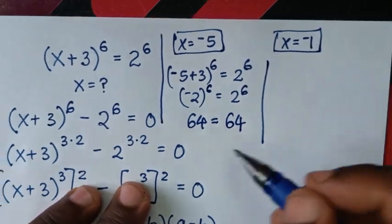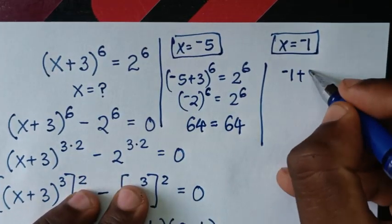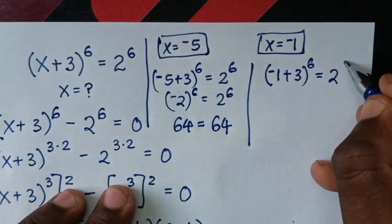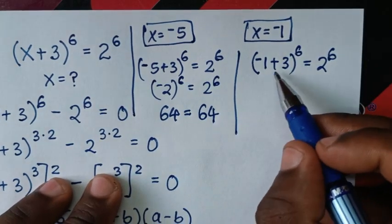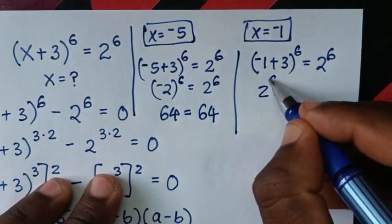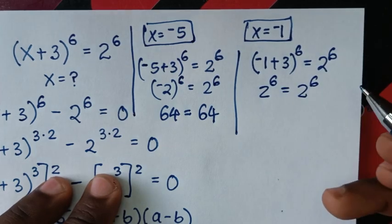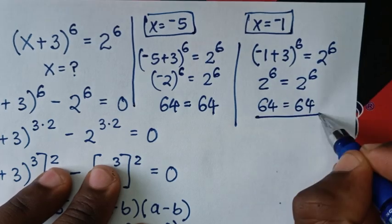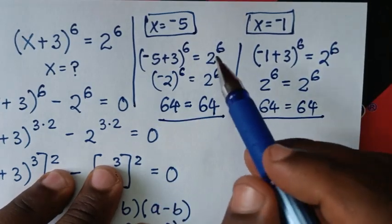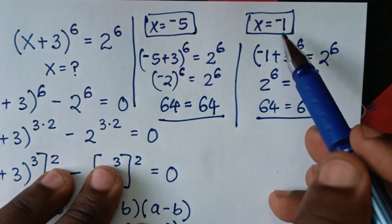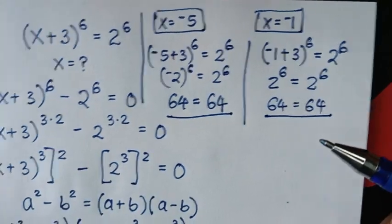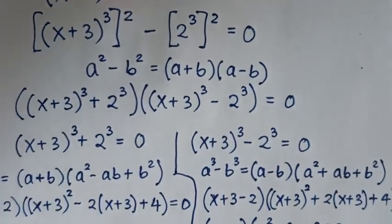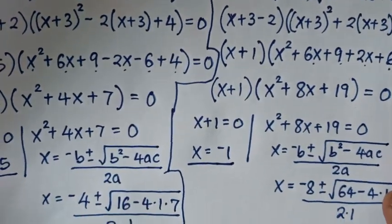For x = −1: substitute to get (−1 + 3)^6 = 2^6, which is 2^6 = 2^6, so 64 = 64. Left side and right side are equal, so it is true. These real solutions, −5 and −1, are verified. The complex solutions are also correct. Thank you — don't forget to subscribe to my channel and see you in the next video.